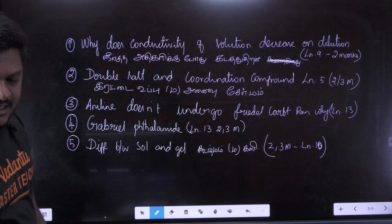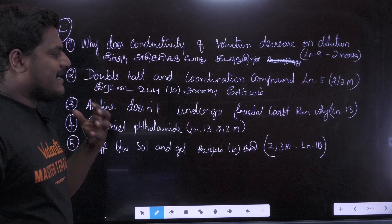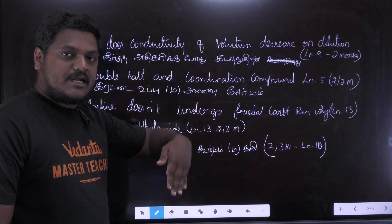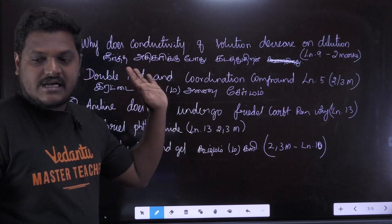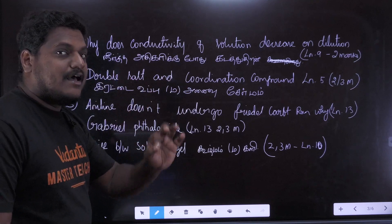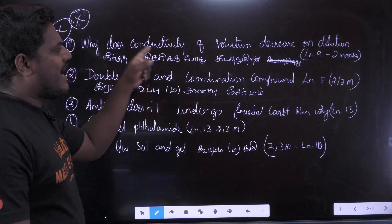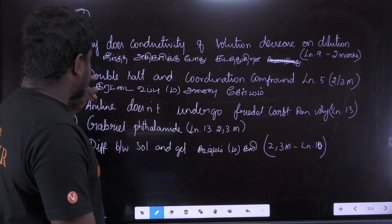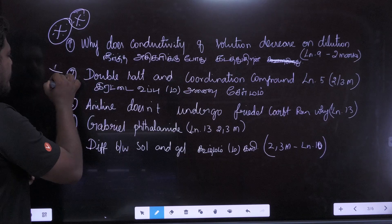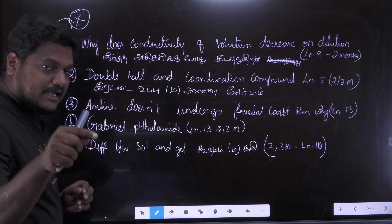This is from Lesson 9, a 2-mark question — one of the ultimate important questions. I am going to put the PDF in the description. If you know this question, you will see in the video — this is a very, very important question. The difference between double salt and coordination compound — this is a golden question.